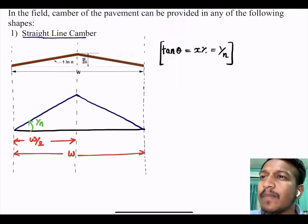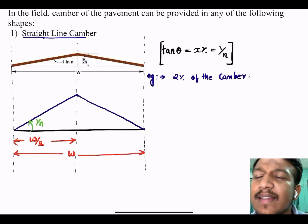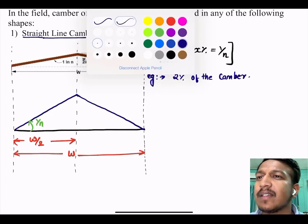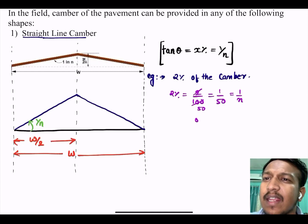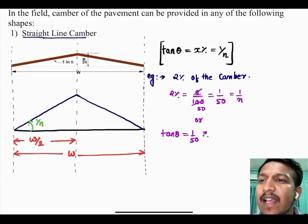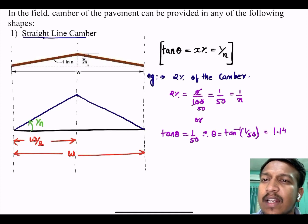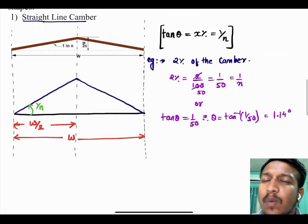Just an example, if camber is 2%, then 2% equals 2 by 100 which equals 1 by 50. Therefore 1 is to n, that is n equals 50 here, or I can write as tan θ equals 1 by 50.